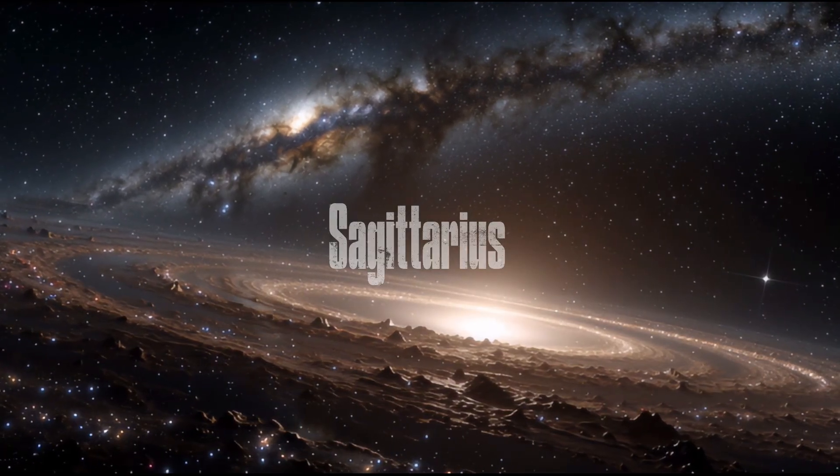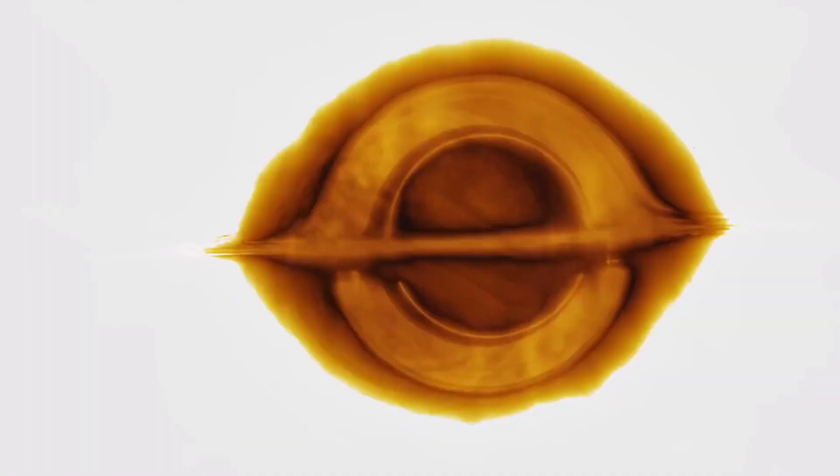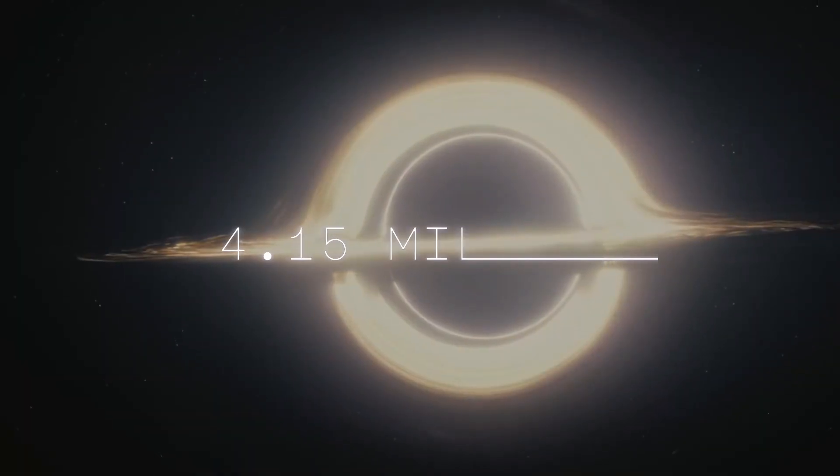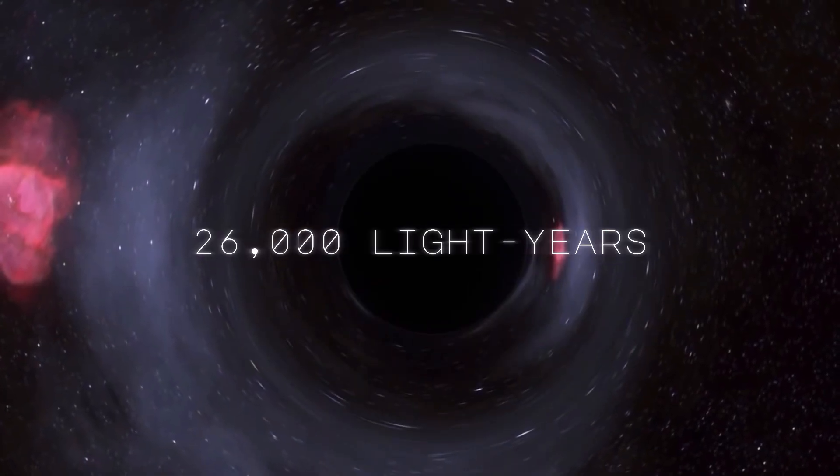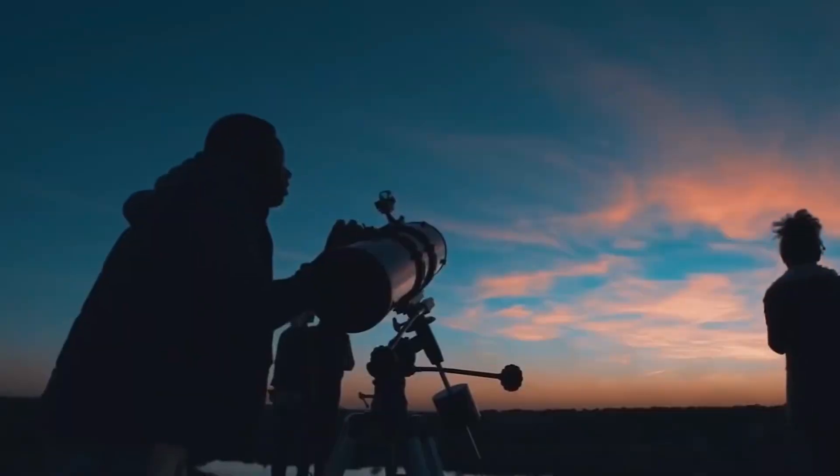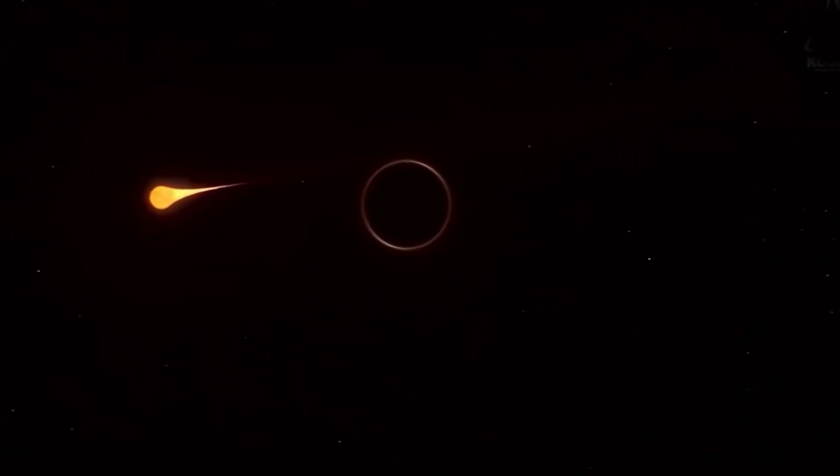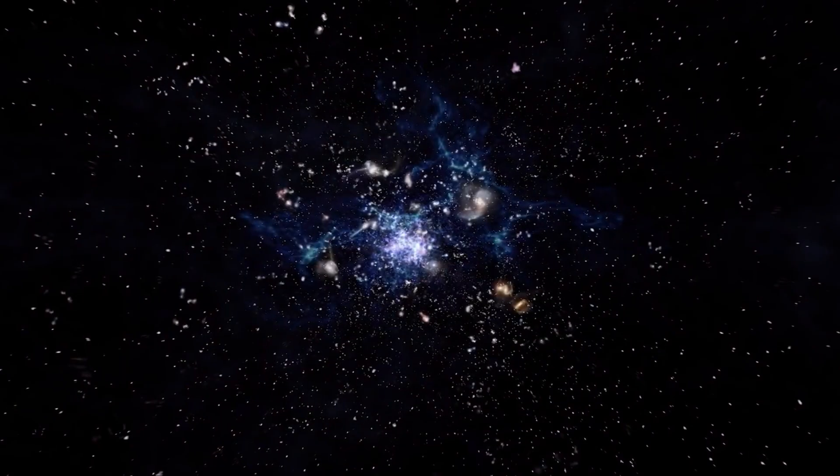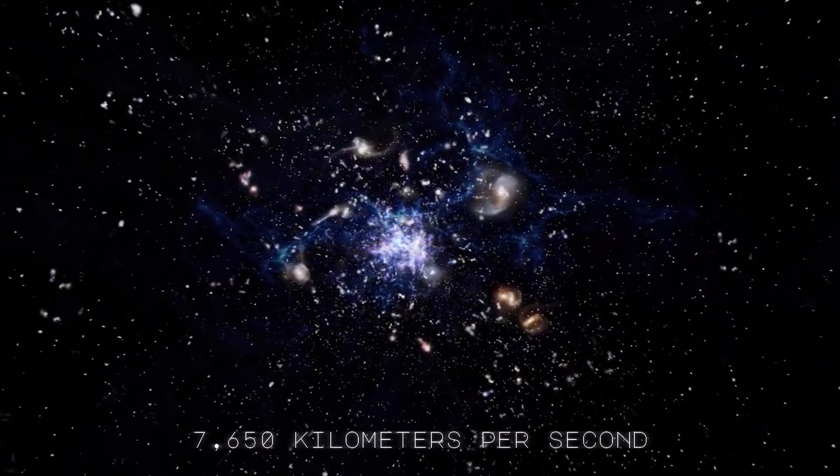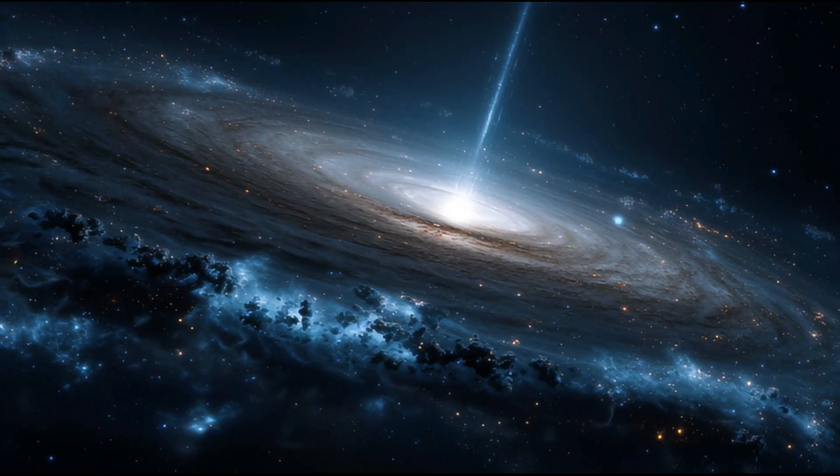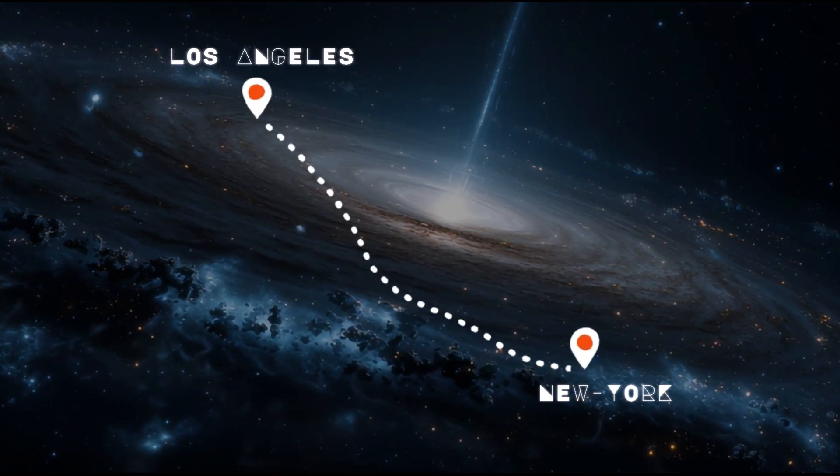Take Sagittarius A*, the supermassive black hole at the center of our Milky Way. This beast weighs in at about 4.15 million solar masses and sits roughly 26,000 light-years away from us. We've actually watched stars orbit around it. The star S2 completes an orbit every 16 years, reaching speeds of about 7,650 kilometers per second at its closest approach. That's 2.5% the speed of light, fast enough to travel from New York to Los Angeles in about half a second.